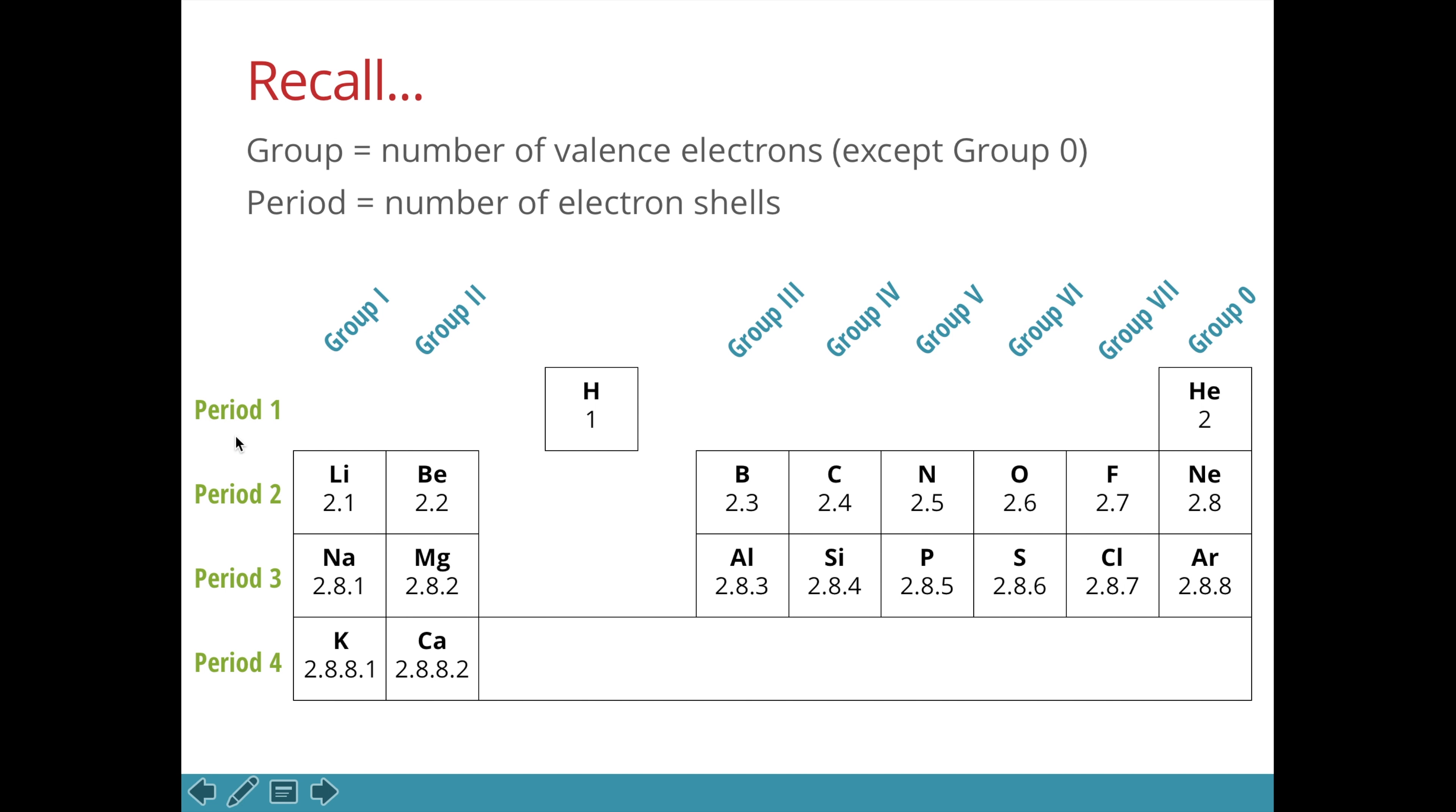The period number tells us how many electron shells an atom has. Period 1 elements have only 1 electron shell, while period 3 elements have 3 electron shells.